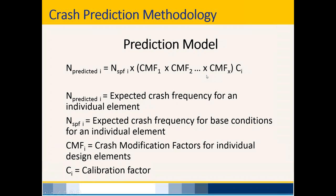For example, base conditions may specify 12-foot lanes, but you're considering 11-foot lanes. Base conditions may include 6-foot paved shoulders, but you're considering 4-foot paved shoulders. For each of these differences from the base conditions of the SPF, you would need to apply an appropriate CMF. The calibration factor adjusts for the fact that SPFs are based on national data and may not perfectly fit Kentucky roadways.